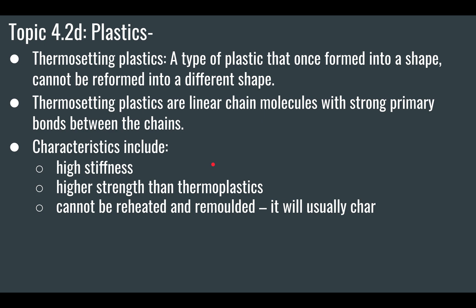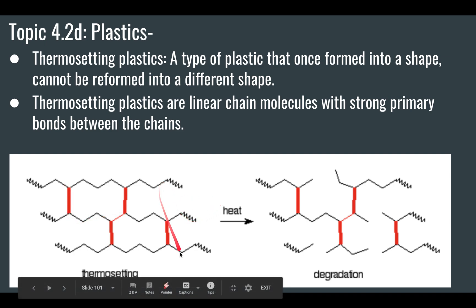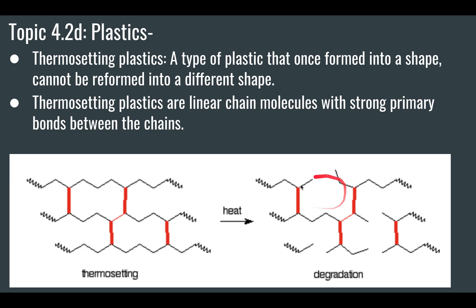That brings us to thermosetting plastics. This is a type of plastic that, once formed into shape, cannot be reformed into a different shape. Thermosetting plastics have linear chain molecules with strong primary bonds between the chains — they connect across the chains. They are really stiff, with high stiffness and high strength, and they cannot be reheated or remolded; they will usually char or burn. When you heat them, they degrade because those cross-linking bonds are quite strong. This gives them high stiffness but makes them very difficult to recycle.